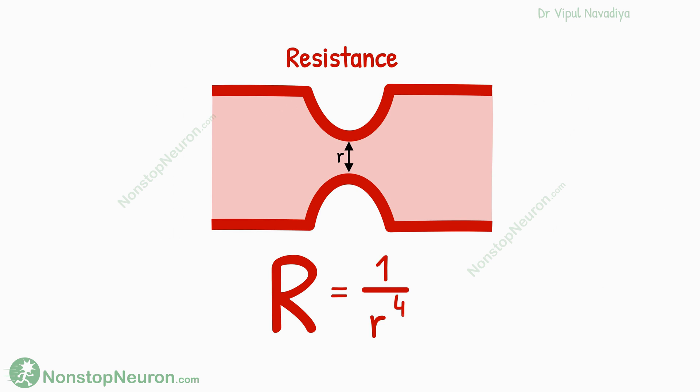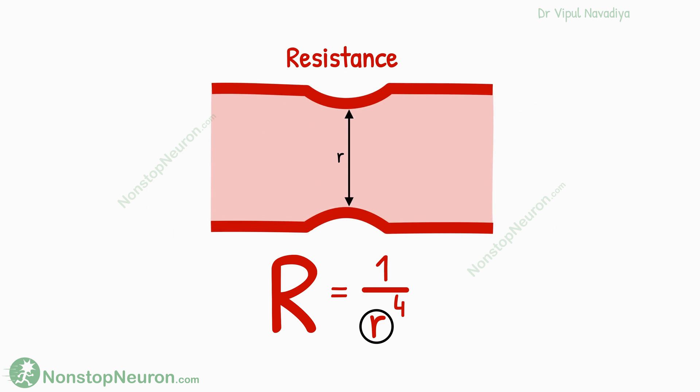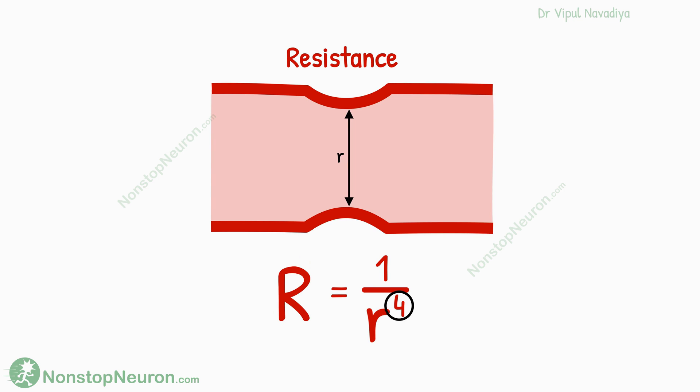There are two points to be inferred from this relationship. One, the resistance is in the denominator—means with an increase in radius, the resistance falls. And second, it's related to the fourth power, which multiplies the impact of radius. So even a small increase in radius causes a huge fall in resistance. In short, there is a drastic fall in resistance with an increase in the radius of the vessel.